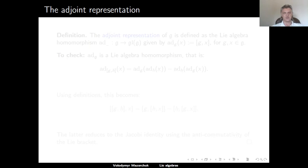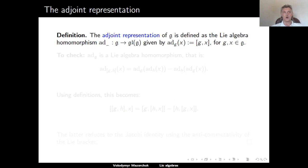Let us consider another very important example of a representation called the adjoint representation. This is a representation of the Lie algebra g on itself. It is defined as the Lie algebra homomorphism called ad (adjoint) from g to the general linear Lie algebra gl(g). For an element g in g, the linear operator ad(g) evaluated at an element x in g is defined as the bracket of g and x.